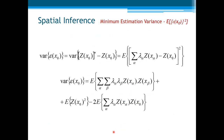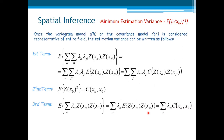Now let's see the second quality criterion: the minimum variance of the error. The variance of the error can be written as the square of this difference. Expanding this square, we get three terms. Once the variogram model gamma of H, or the covariance model, is considered representative of the entire field, the estimation variance can be written with those three terms.